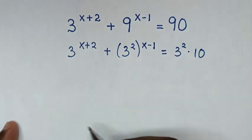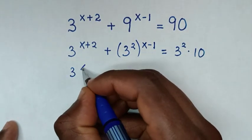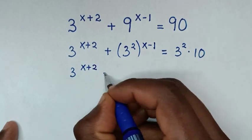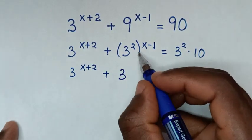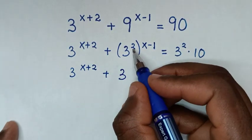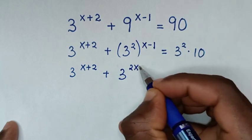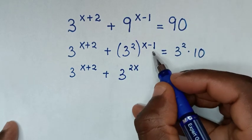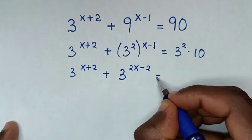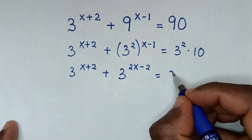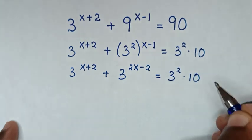Then in the next step, it will be 3 power of x plus 2 plus 3. We open the bracket, so it will be 2 times x is 2x, and 2 times negative 1 is negative 2, giving 3 power of 2x minus 2, and this is equal to 3 squared times 10.